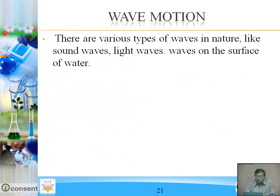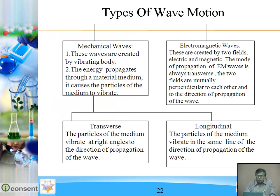There are various types of waves in nature, like sound waves, light waves, and waves on the surface of water. Types of waves: mechanical waves and electromagnetic waves. Mechanical waves are further classified into two types: transverse and longitudinal. Mechanical waves are created by a vibrating body, and the energy propagates through a material medium, causing the particles of the medium to vibrate.